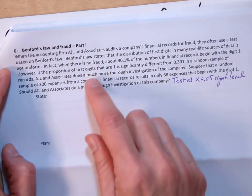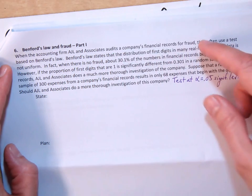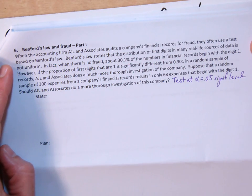When the accounting firm AJL and Associates audits a company's financial records for fraud, they often use a test based on Benford's Law. Benford's Law states that the distribution of first digits in many real-life sources of data is not uniform. In fact, when there's no fraud, about 30.1% of the numbers in financial records begin with the digit 1.